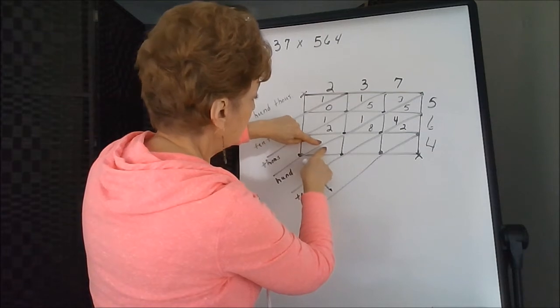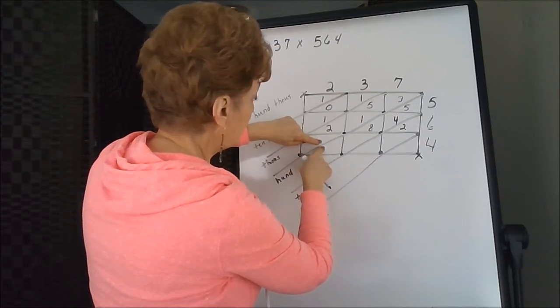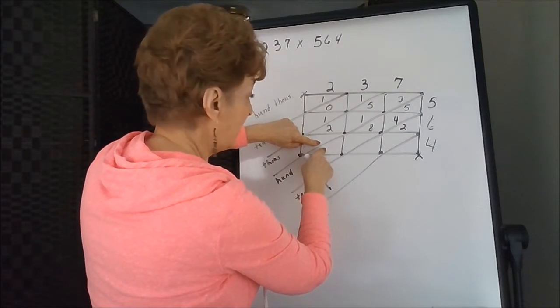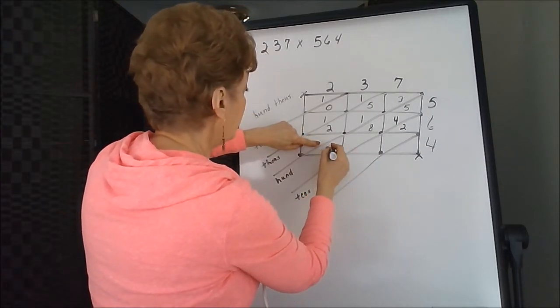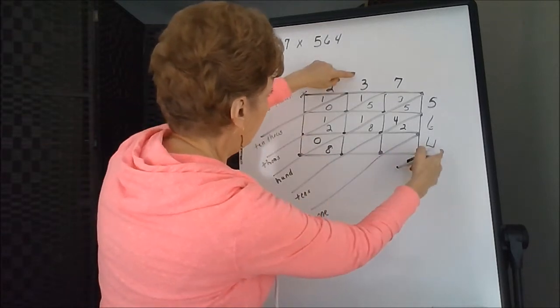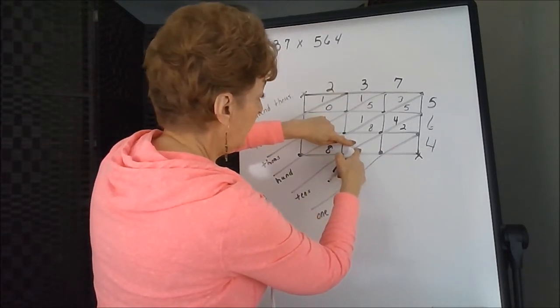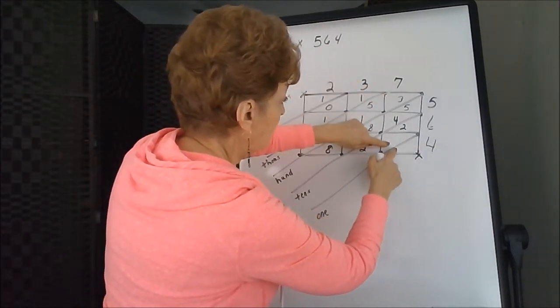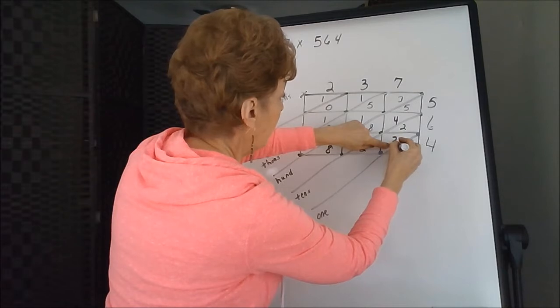Two times four intersect in this box. The two and the four is eight. That's a single digit number, so I'm going to put it on as zero eight. Three hits four at twelve, and seven times four is twenty-eight.